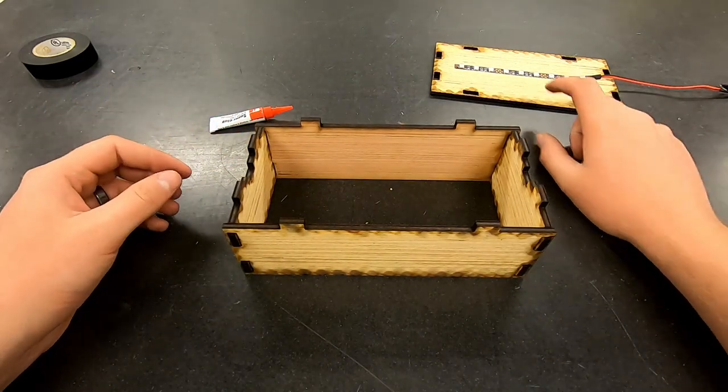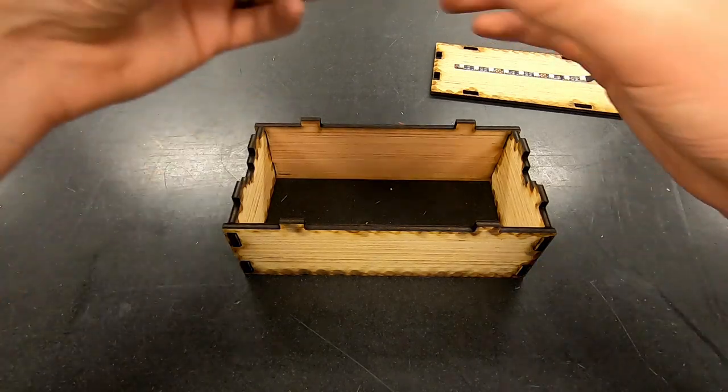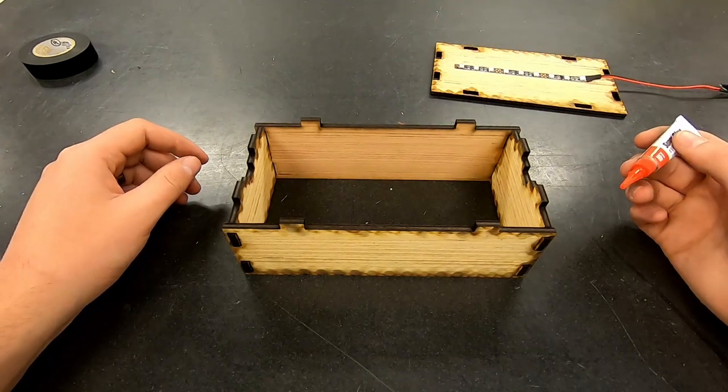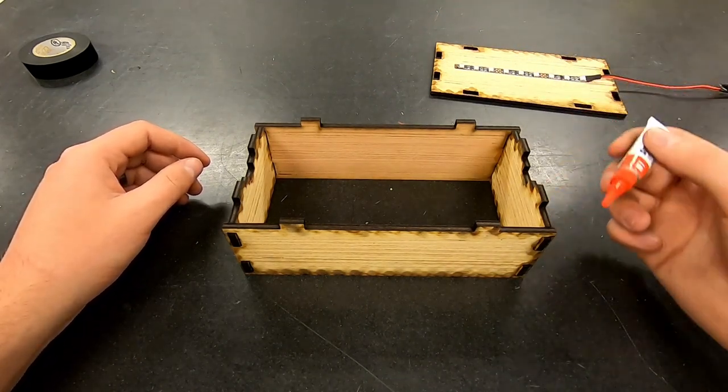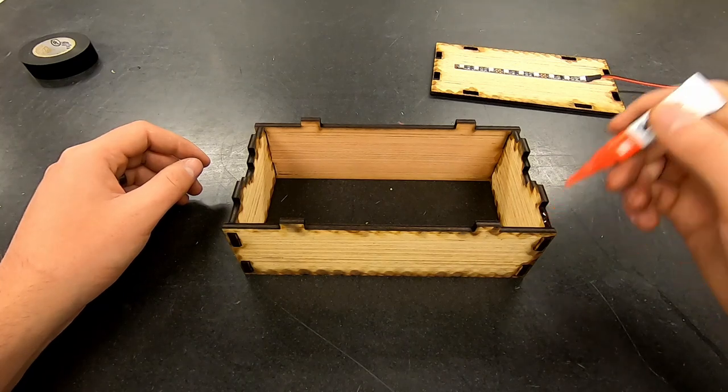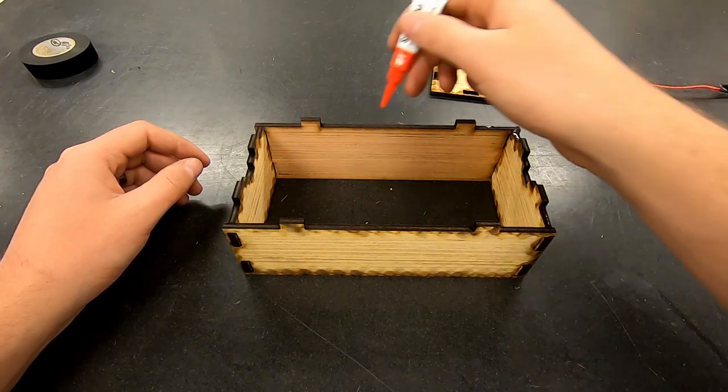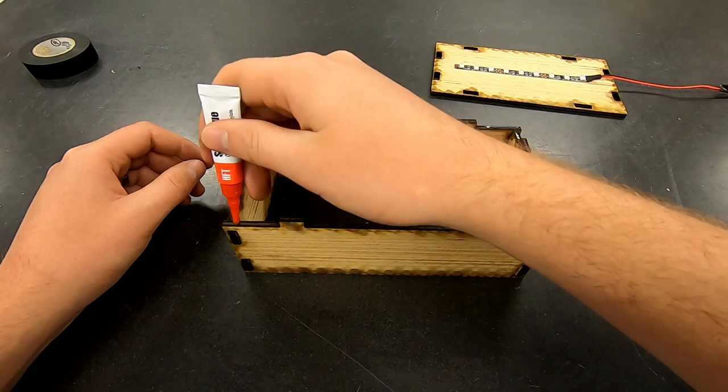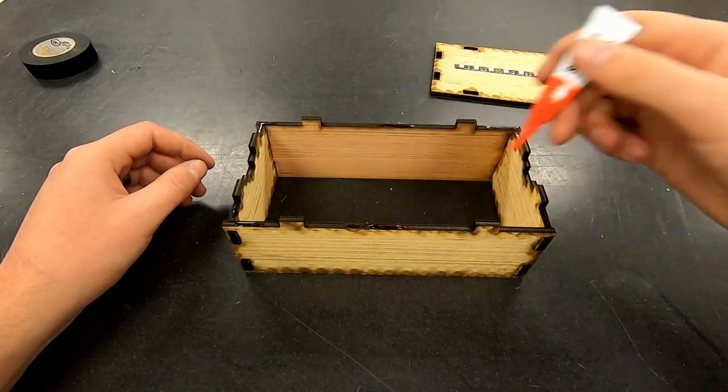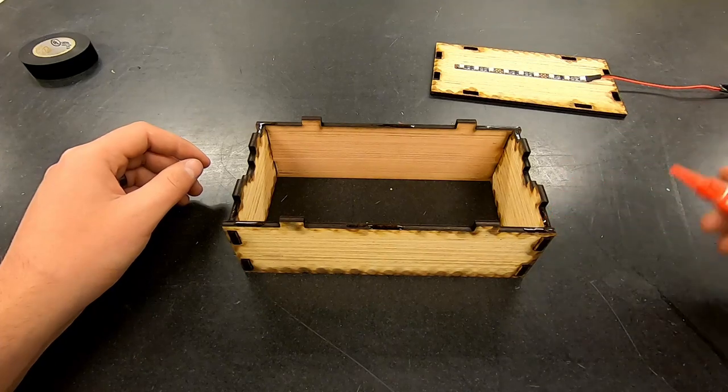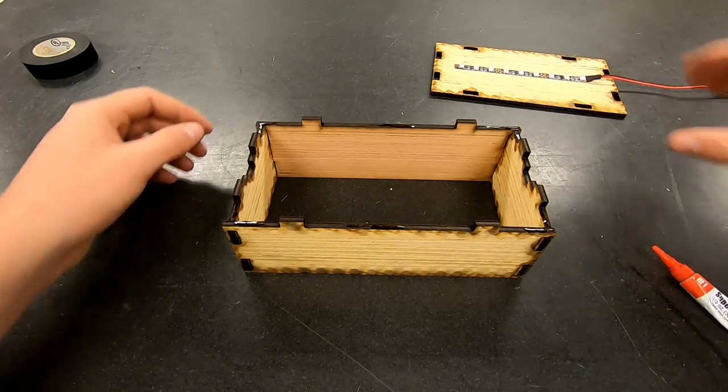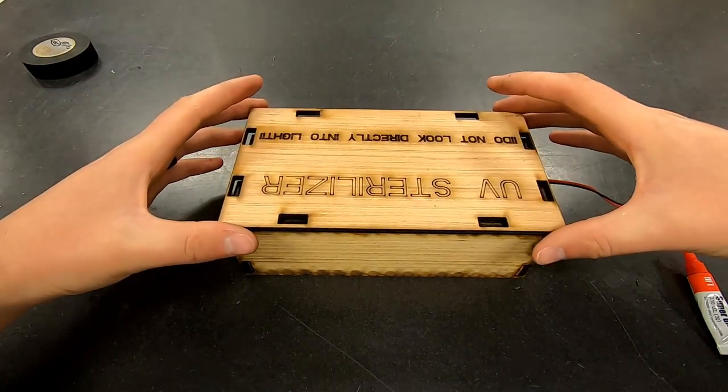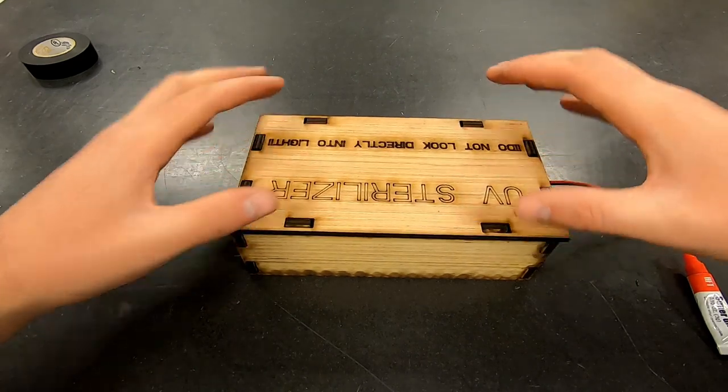So what we're going to do now is glue the top onto the base. So for this you really just need to dab glue in a couple different places along the outside where the top will come in contact with the base. So I'm just going to do a little bit along the corners and along the long edges here.